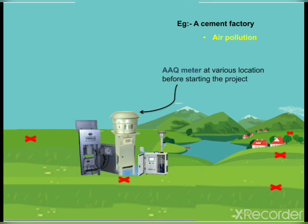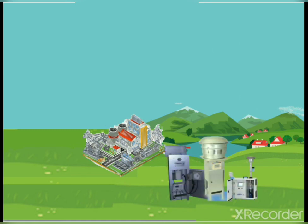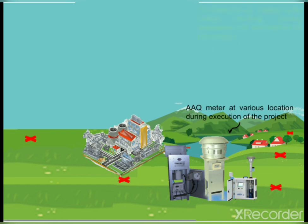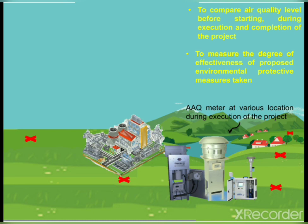Before starting the project, the proponent has to install AAQ (Ambient Air Quality) meters at various marked locations to measure the air quality level. During the construction and at the completion of the project, the proponent has to again install the AAQ meter at the same locations to find out the air quality level. By comparing the air quality levels before, during, and after execution, it gives the degree of effectiveness of the proposed environmental protective measures taken by the proponent.